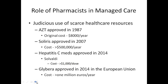Fast forward to 2007: Soliris, for paroxysmal nocturnal hemoglobinuria, costs half a million dollars a year. Then the hepatitis C medications approved recently — Sovaldi among others — are all over the news and even inspiring congressional testimony. Drugs like Sovaldi are over $1,000 a dose.